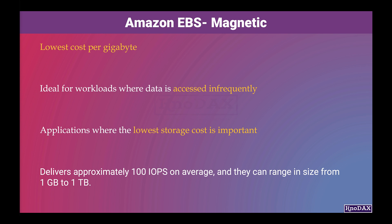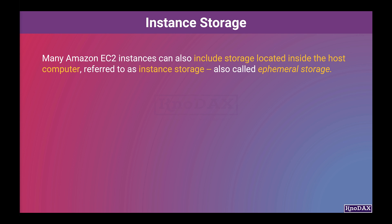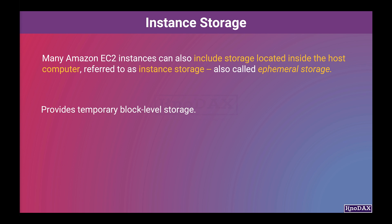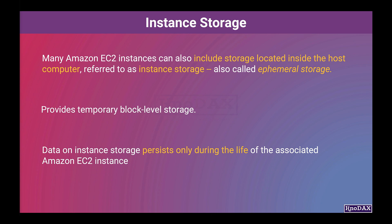Another important storage type is instance storage. Many Amazon EC2 instances can also include storage located inside the host computer, referred to as instance storage. It is also called ephemeral storage because of its transient nature. Instance storage provides temporary block-level storage for Amazon EC2 instances, meaning the data on instance storage persists only during the life of the associated instance.